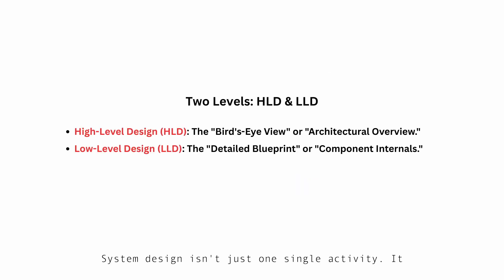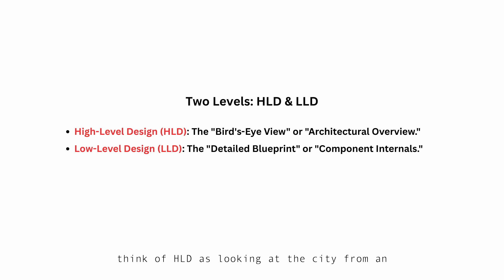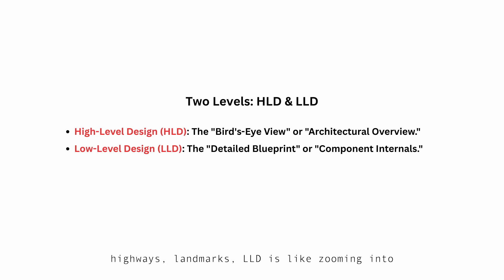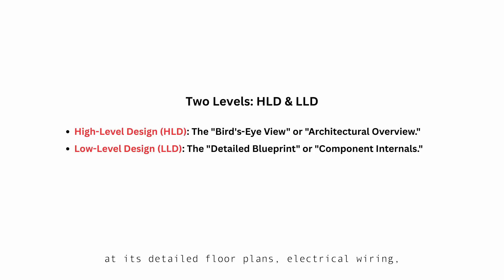System design isn't just one single activity — it happens at two different levels of detail. The two primary levels are High Level Design or HLD and Low Level Design or LLD. Think of HLD as looking at the city from an airplane — you see all the major districts, highways, and landmarks. LLD is like zooming into one specific building in that city and looking at its detailed floor plans, electrical wiring, and plumbing — going into super in-depth detail.